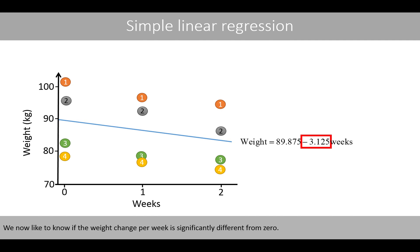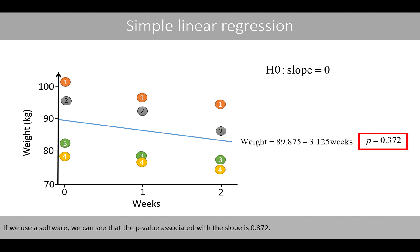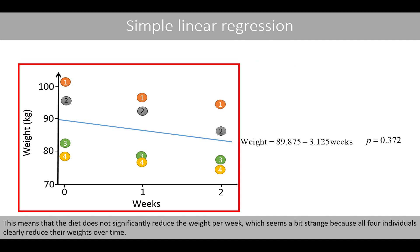We now like to know if the weight change per week is significantly different from zero — in other words, can we reject the null hypothesis that states that the slope is equal to zero, which means that the diet has no effect? If we use the software, we can see that the p-value associated with the slope is 0.372. Since this p-value is bigger than the general significance level of 0.05, we do not reject the null hypothesis and conclude that the slope is not significantly different from zero. This means that the diet does not significantly reduce the weight per week, which seems a bit strange, because all four individuals clearly reduce their weights over time.